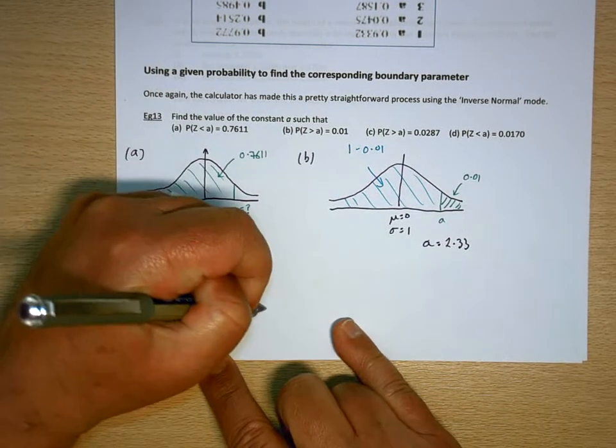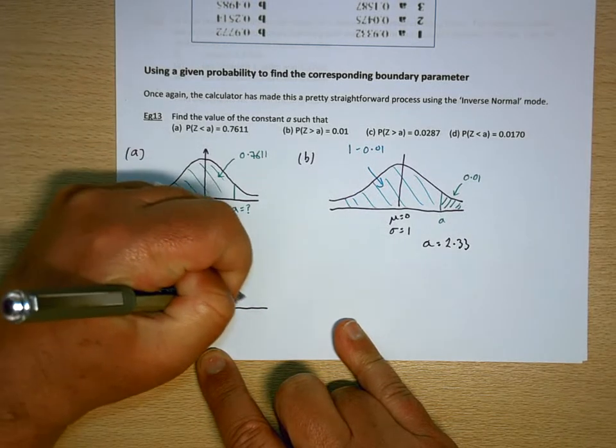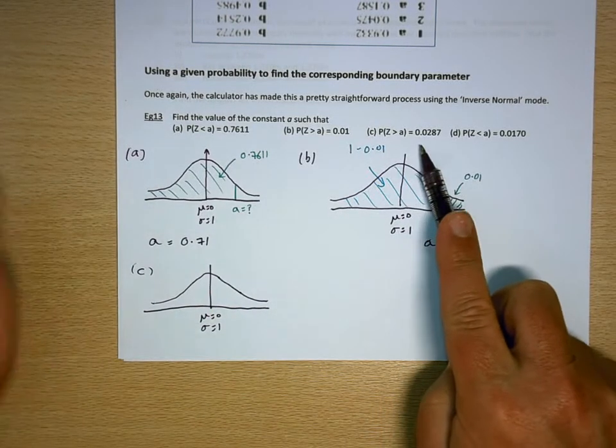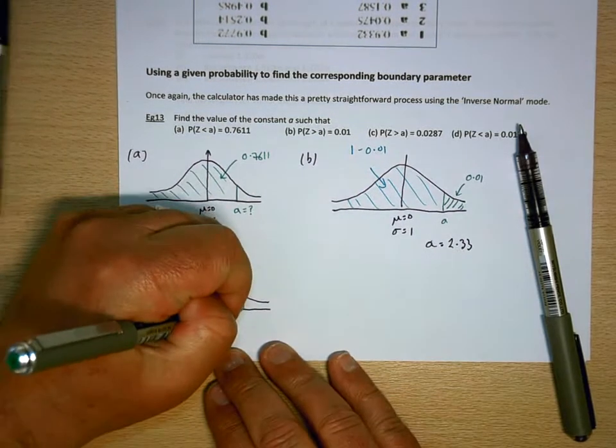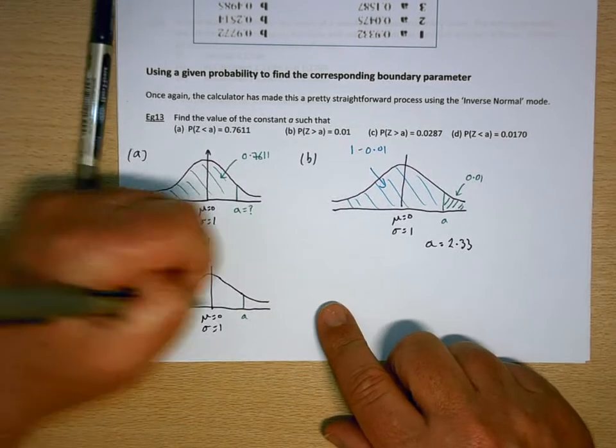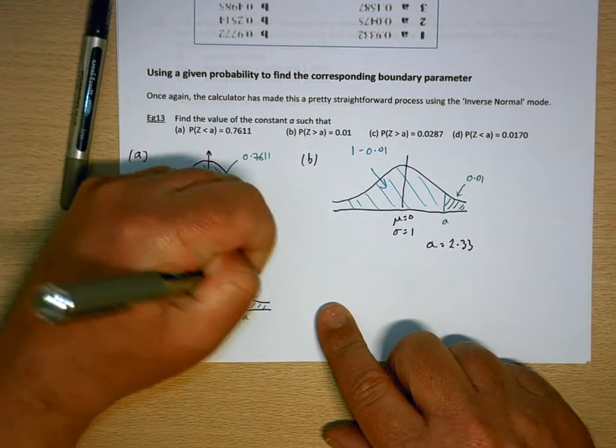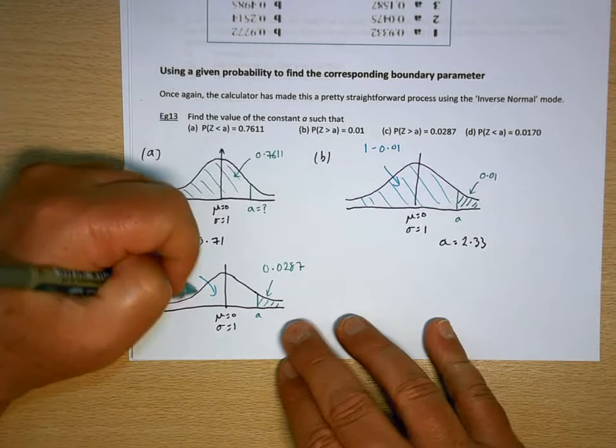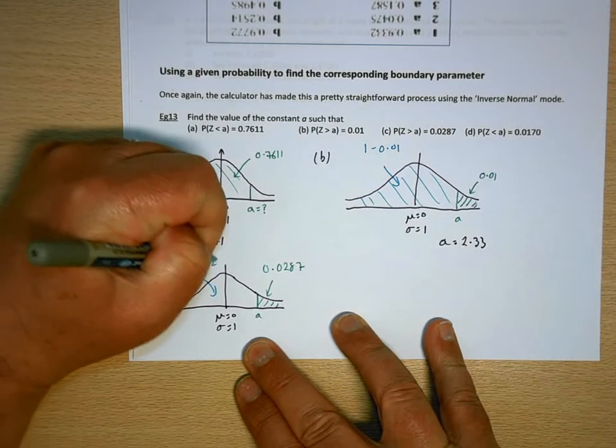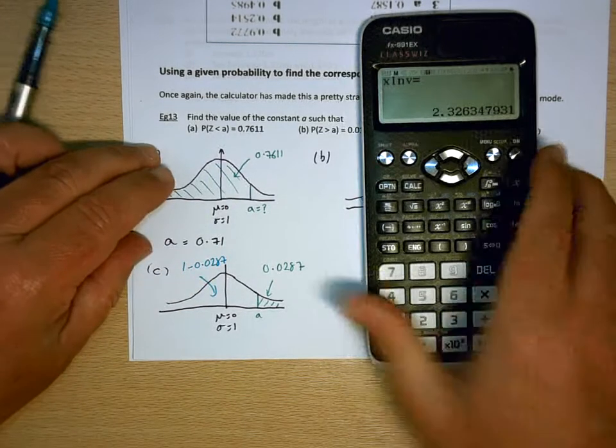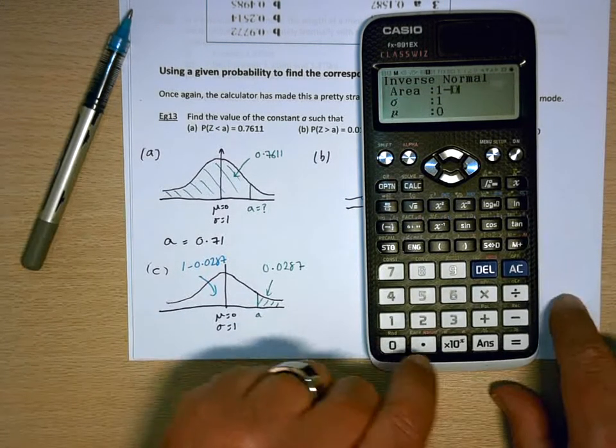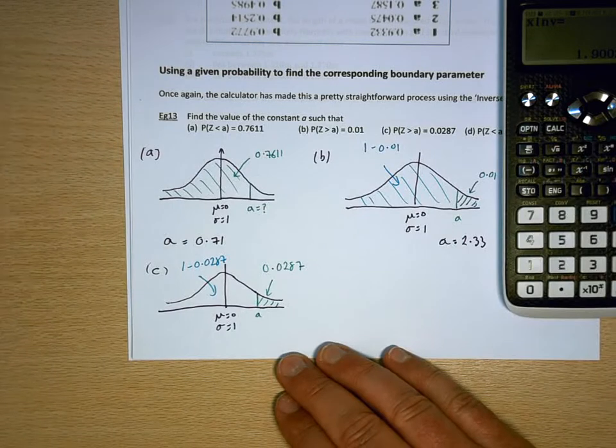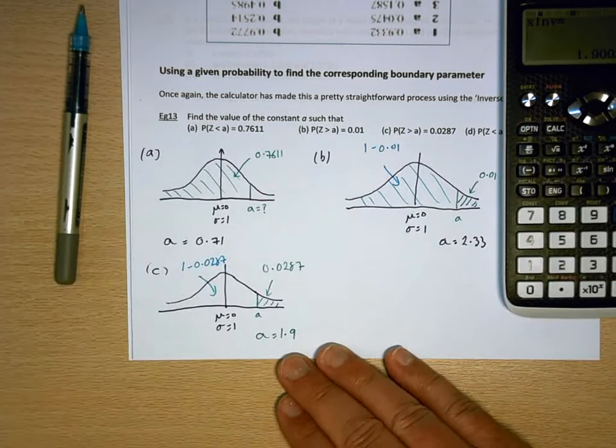So let's go to part C. Probability that a is greater than. So this is another greater than, so it's going to be that side. This area 0.0287. So I'm interested in this, well I'm not interested but this is what the calculator needs, is going to be 1 minus 0.0287. So on my calculator, 1 minus 0.0287, it's going to be 1.9. So a equals 1.9.